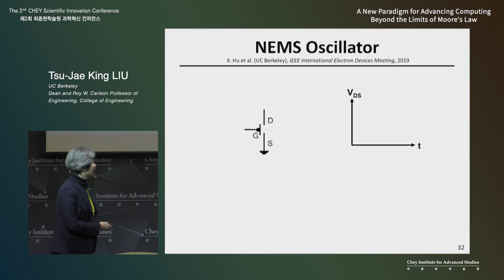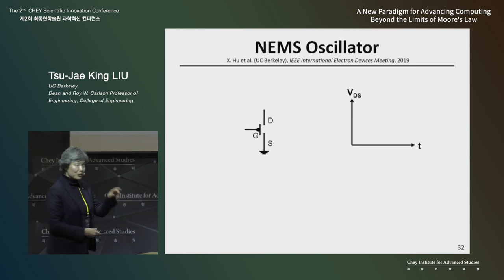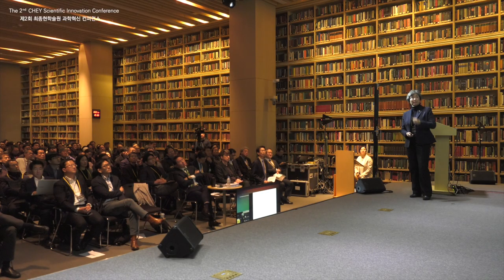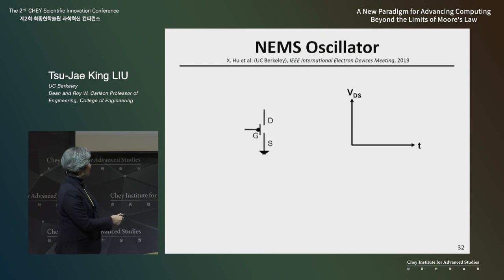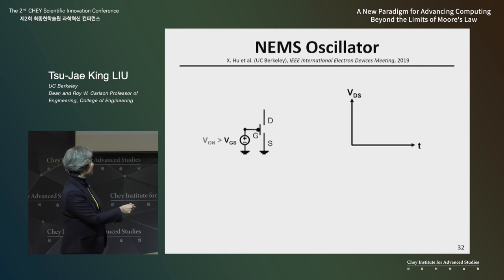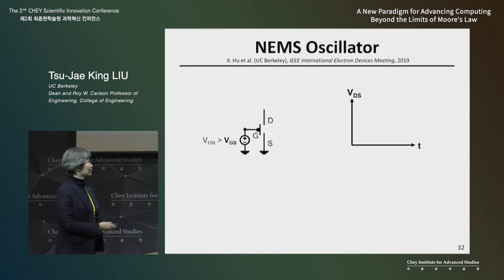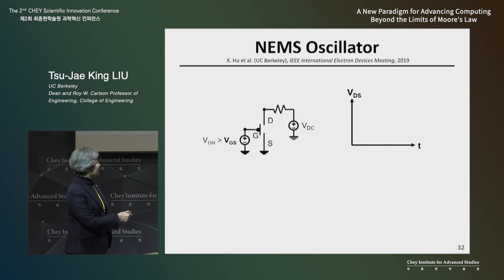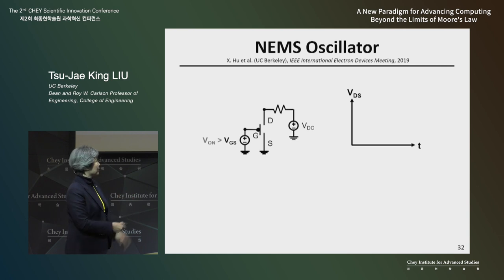I want to come back to the mechanical switch. It turns out that a mechanical switch can be a very compact oscillator. We have a gate electrode that controls the current flowing between the source and drain. If we apply a voltage to the gate, there's an electrostatic force between the gate and the source to pull the source into contact with the drain.